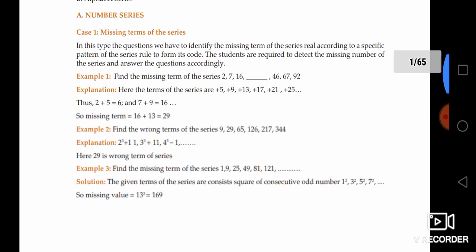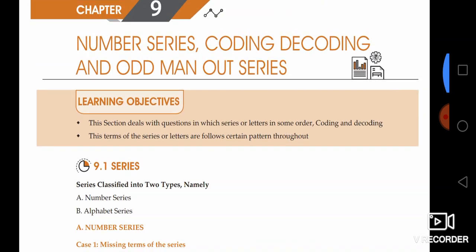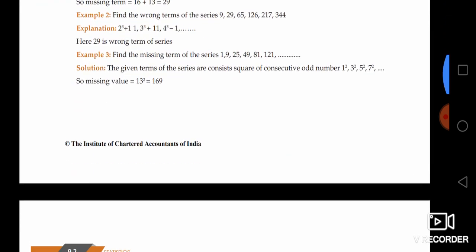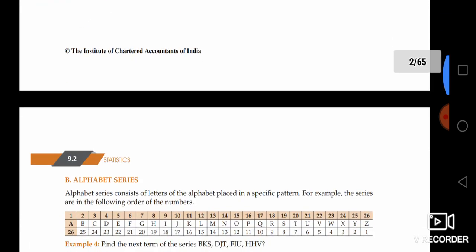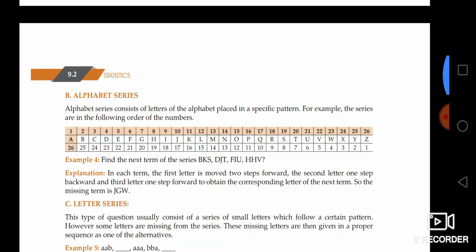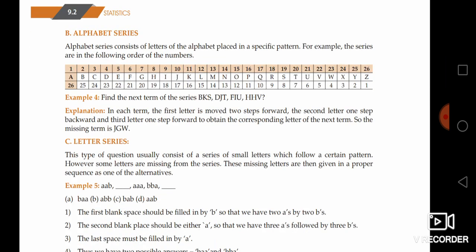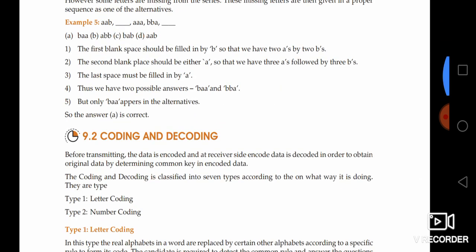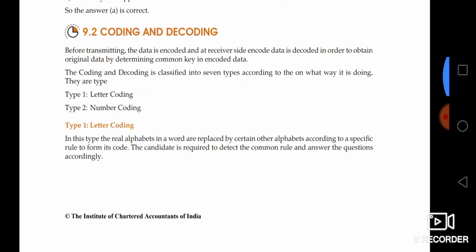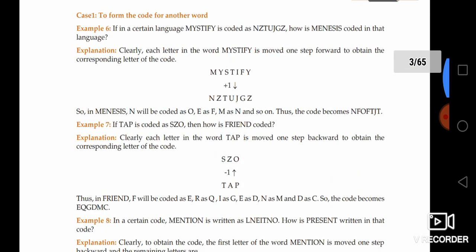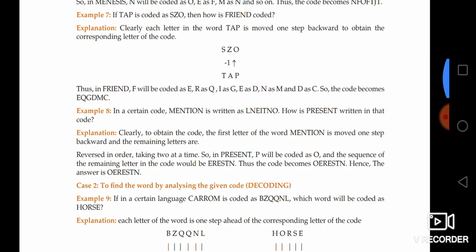Here we have the number system, coding and decoding, odd man out, series problems, and remaining topics. For example, we have a table in the alphabet — we use them to understand what questions are asked. So we have to talk clearly about this logical reasoning. English Medium is very useful.